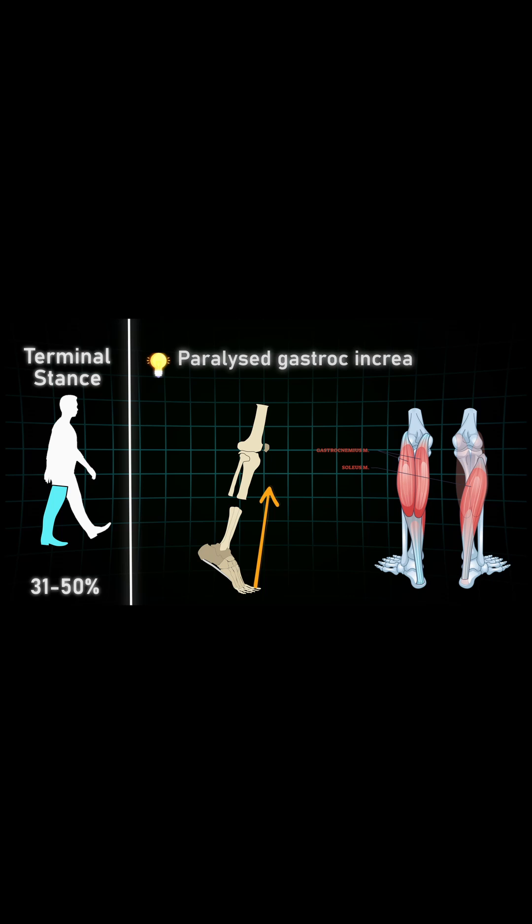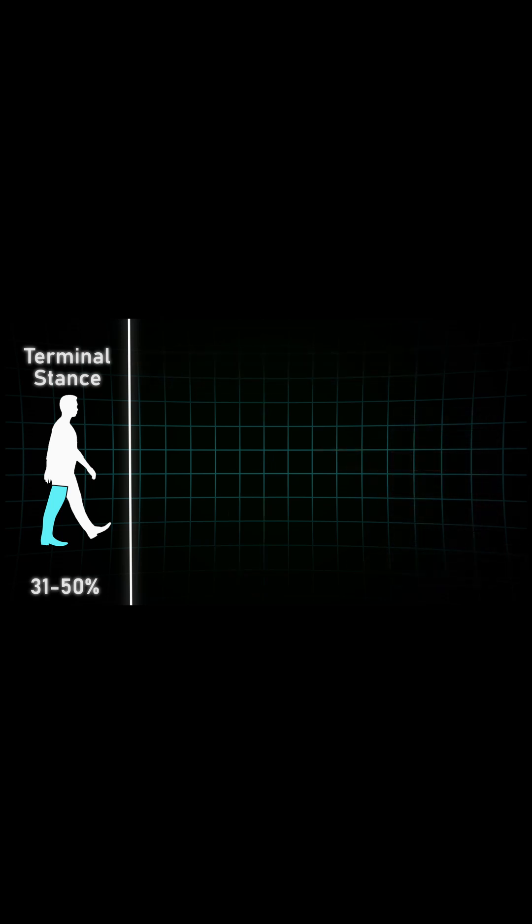A paralyzed gastrocnemius will lead to an increased risk for genu recurvatum. Let that sink in. Did you know that a paralysis of the musculus soleus makes it nearly impossible for the patient to get through this gait phase?